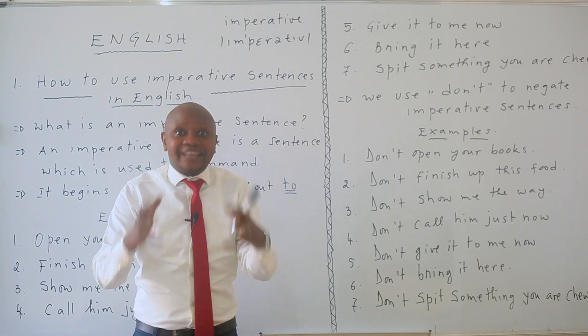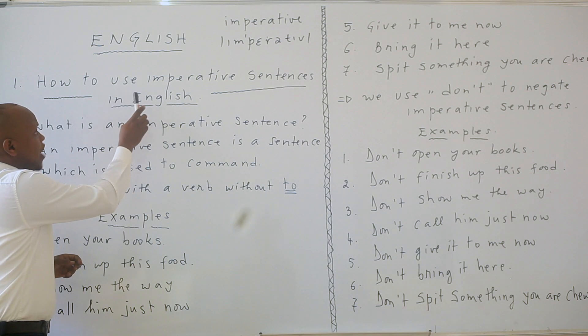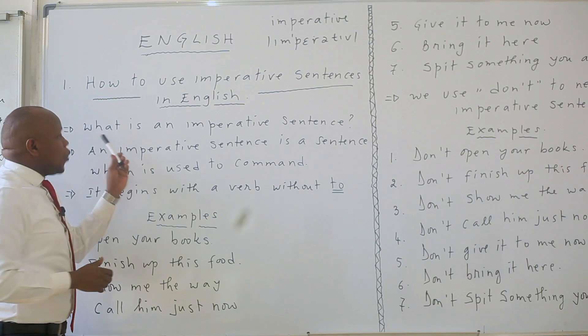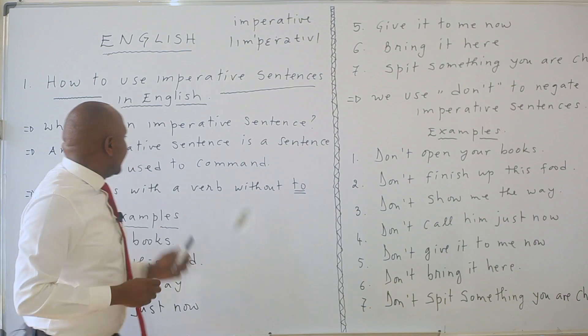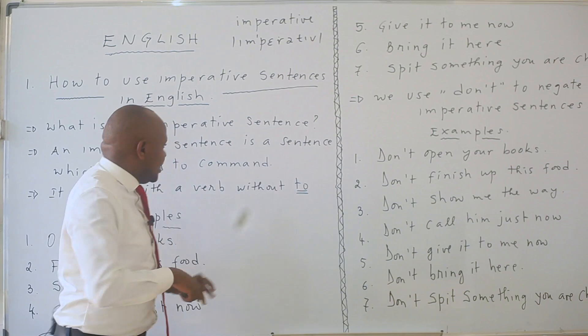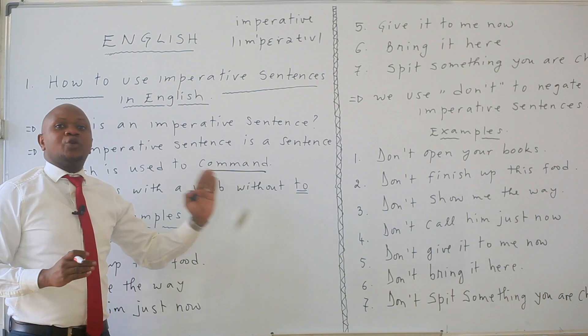How to use imperative sentences in English — that is our lesson of today. What is an imperative sentence? An imperative sentence is a sentence which is used to command. It commands. It begins with a verb without 'to.' For example, if I say 'go there just now,' I am commanding you to go there.